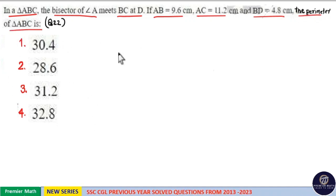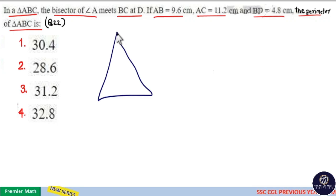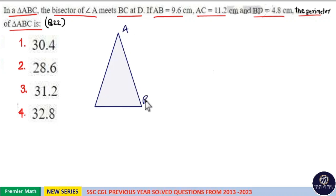Consider, this is the triangle ABC. Now, bisector of A means this angle A bisects equally, that is equally divides and meets BC at D.